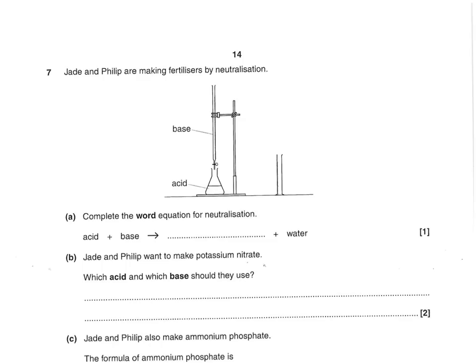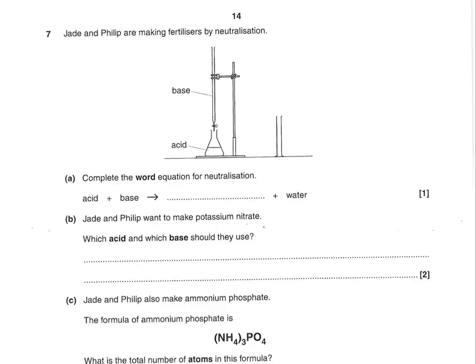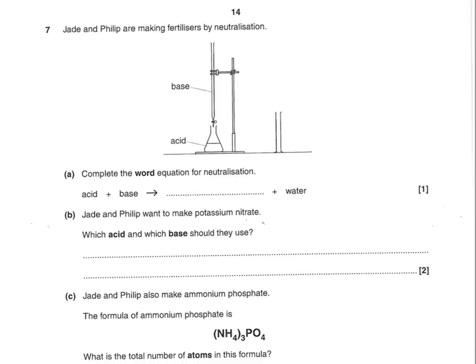Jade and Philip are making fertilizers by neutralization. Complete the word equation for neutralization: acid plus base makes salt plus water. Jade and Philip want to make potassium nitrate — which acid and which base should they use? Two marks, one for each.